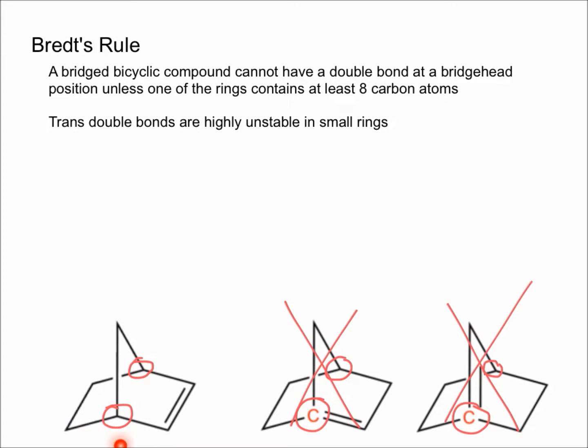Now if you look at the one on the bottom left, you see that the double bond is not at a bridgehead carbon. As a result, this can form, so that molecule can be made, and it would be pretty stable as well.